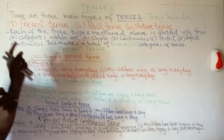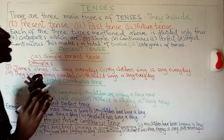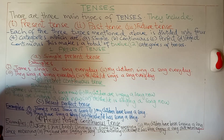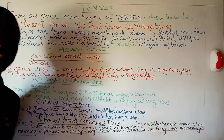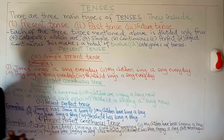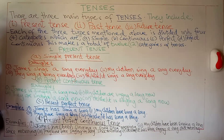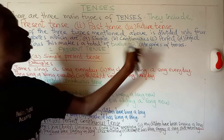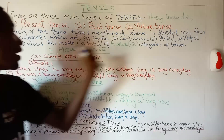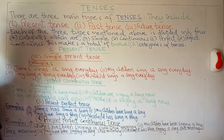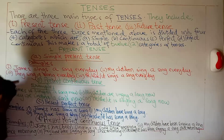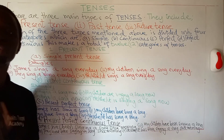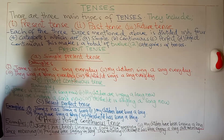I will say that each of these three types mentioned above is divided into four categories. These four categories include simple, continuous, perfect, and perfect continuous. This makes a total of 12 categories of tenses.